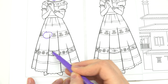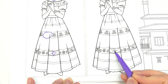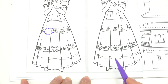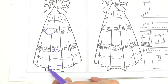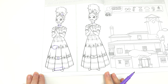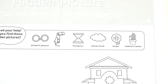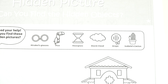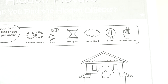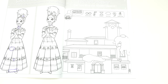We're missing a flower design right there. Do you all see the line that's missing on this picture? It's right down here — that's five differences. Let's keep going! Mirabelle needs our help to find the hidden pictures. We've got Mirabelle's glasses, Pico the bird, hourglass, storm cloud, Arepa, Isabella's cactus. Arepa is a type of bread — pause the video to find all of the images in the Encanto house.